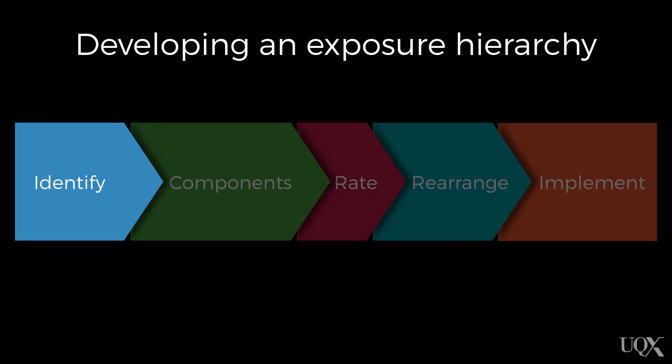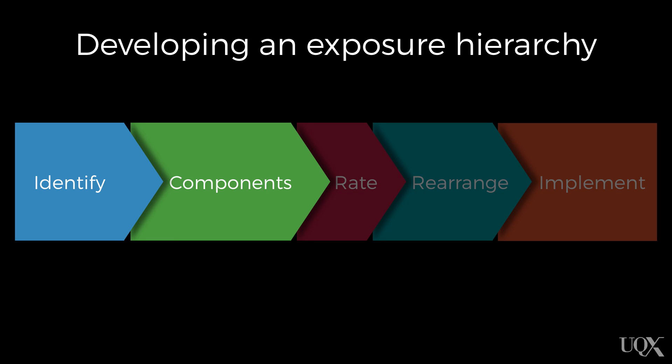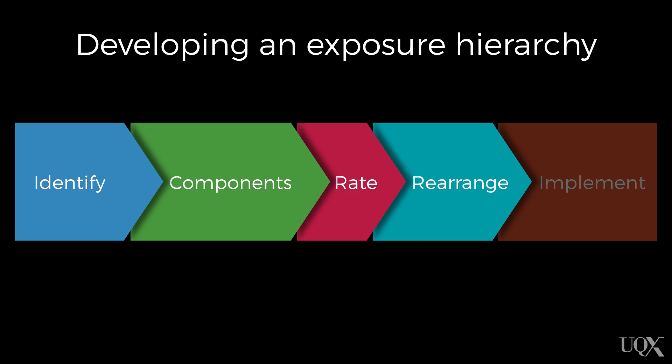Let's have a look at the steps involved in developing an exposure hierarchy. First, identify the feared situation. Then break the feared situation down into as many different component parts as possible, identifying variables that affect how anxiety-provoking the situation is. List the components as specifically as possible and rate each from 0 to 100 in terms of difficulty. Rearrange the items in order of increasing difficulty, and finally, implement the hierarchy.